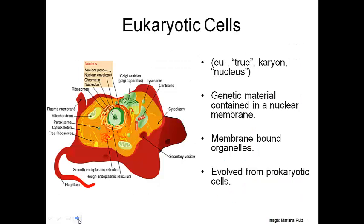The 'eu' part of eukaryotic actually means 'true nucleus.' The genetic material — the DNA or RNA — is in a nuclear membrane, so we call that the nucleus. They have other organelles that have membranes around them, and it is believed they actually evolved from prokaryotic cells. So prokaryotic cells are the simpler versions, and eukaryotic cells showed up later.